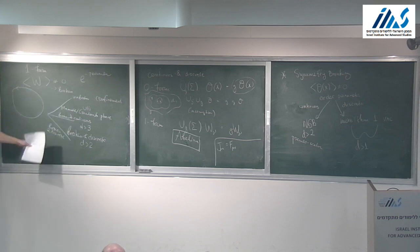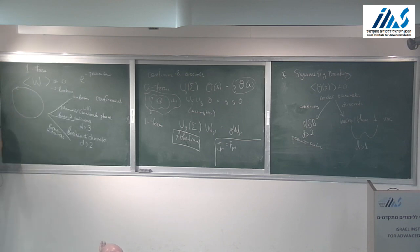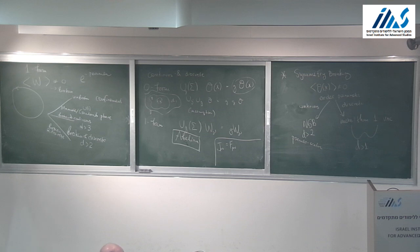Those are the general facts about symmetry breaking for higher-form symmetries. The next topic is coupling to background fields and anomalies — a completely general definition of what is an anomaly, general enough to encompass one-form symmetries, zero-form symmetries, and space-time symmetries.